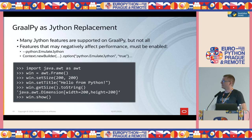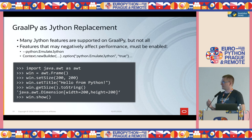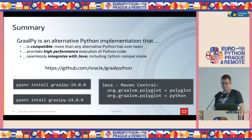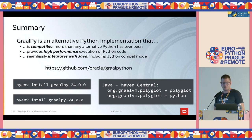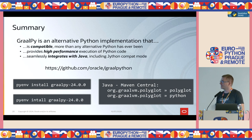There are some features that, if enabled by default, would negatively impact performance, so those must be enabled via options. This is an example of code that would run on Jython as well as on GraalPy, creating a window from Java. In summary, GraalPy is an alternative Python implementation that is compatible — we believe the most compatible alternative Python to date. It provides high performance, especially for pure Python code, and seamlessly integrates with Java, including Jython compatibility mode.